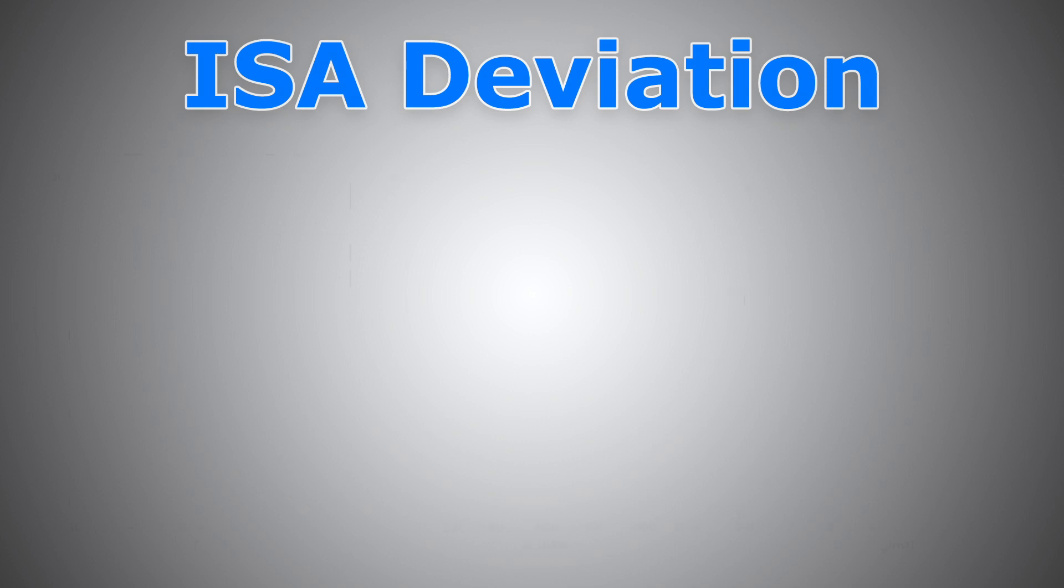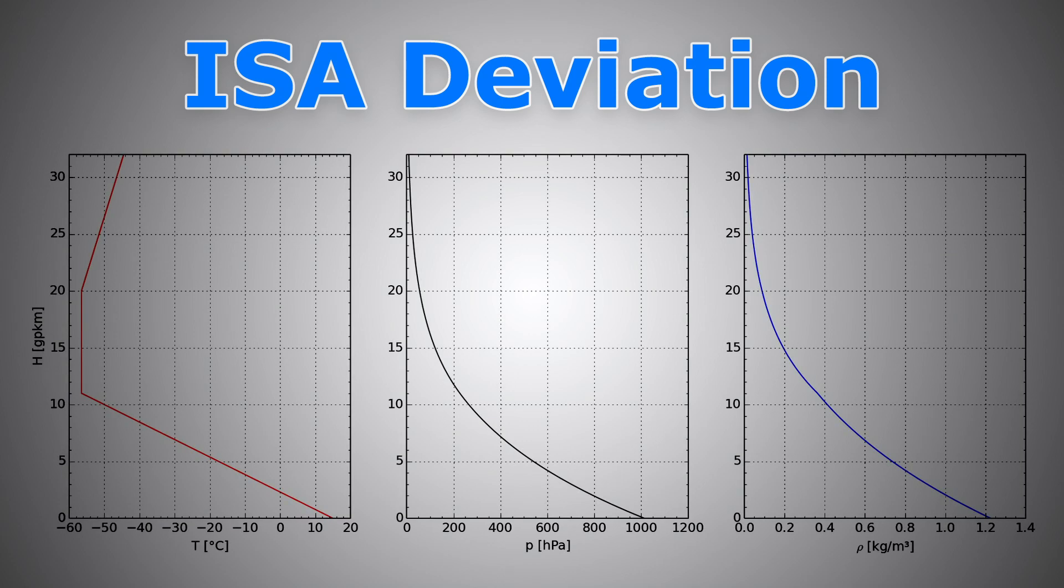So according to ISA atmosphere, here are some values you need to know as a pilot. Temperature, according to ISA at sea level is 15 degrees and it decreases by roughly 2 degrees for every 1000 feet. 1.98 really, but we can safely use 2 degrees for ease of calculation. So it decreases by 2 degrees every 1000 feet until the tropopause is reached at about 36,000 feet, above which the temperature is assumed to be constant at negative 56.5.